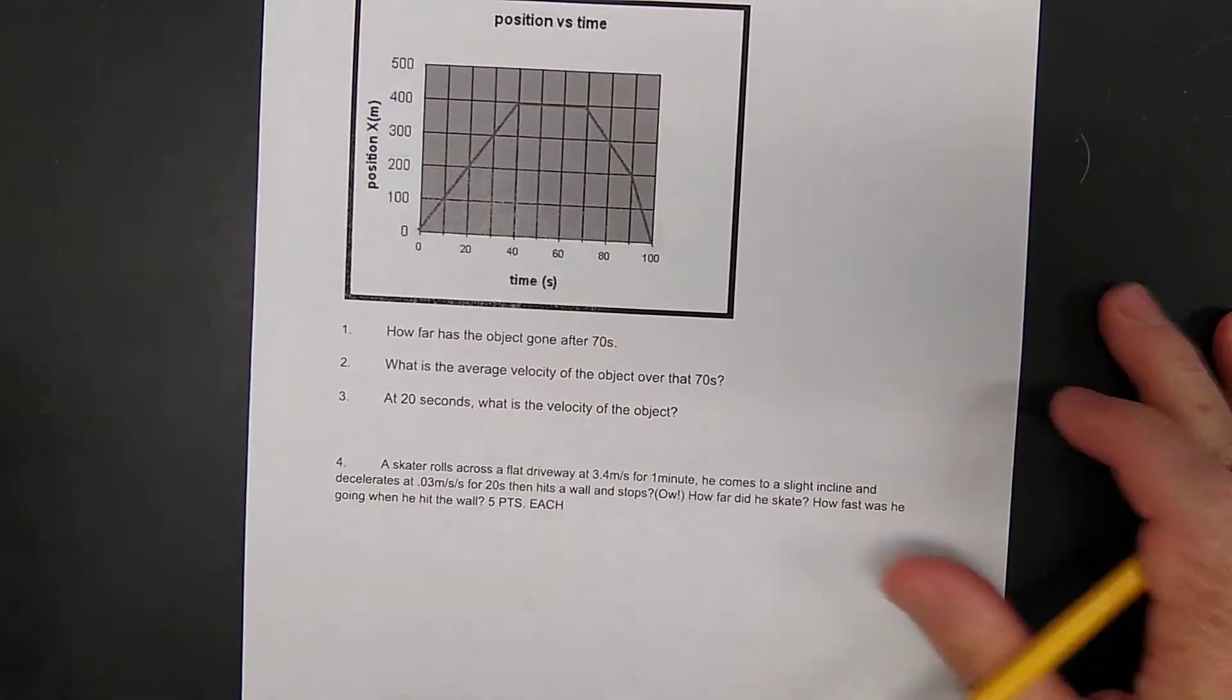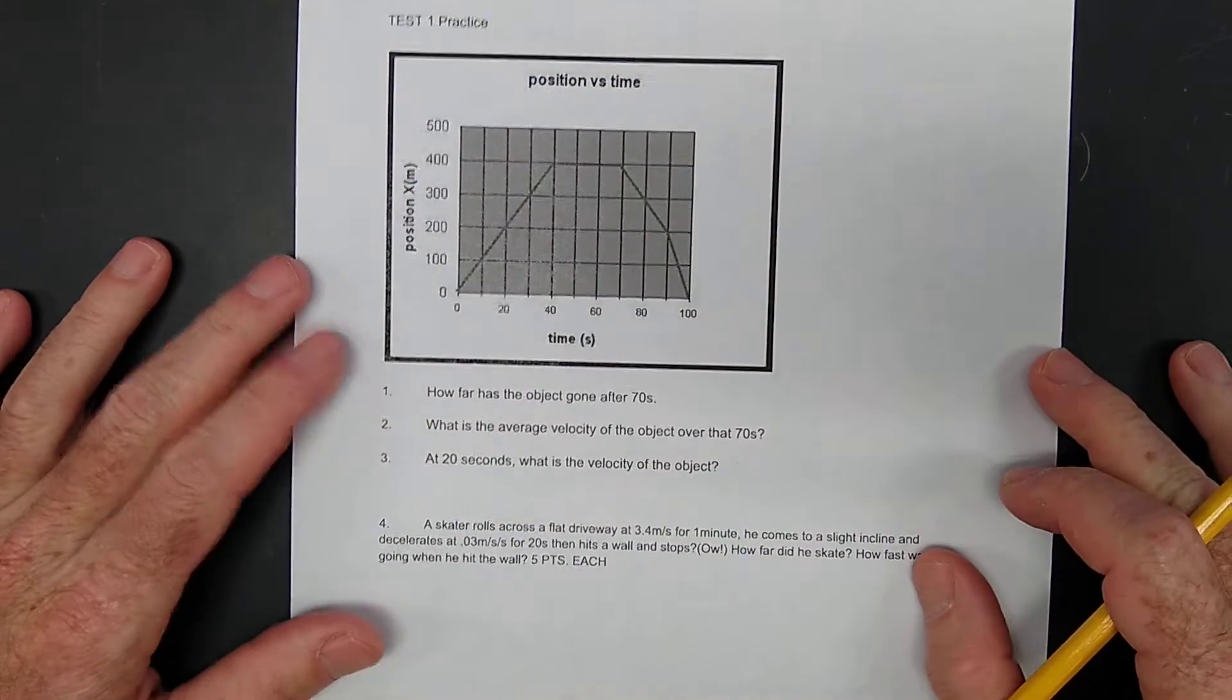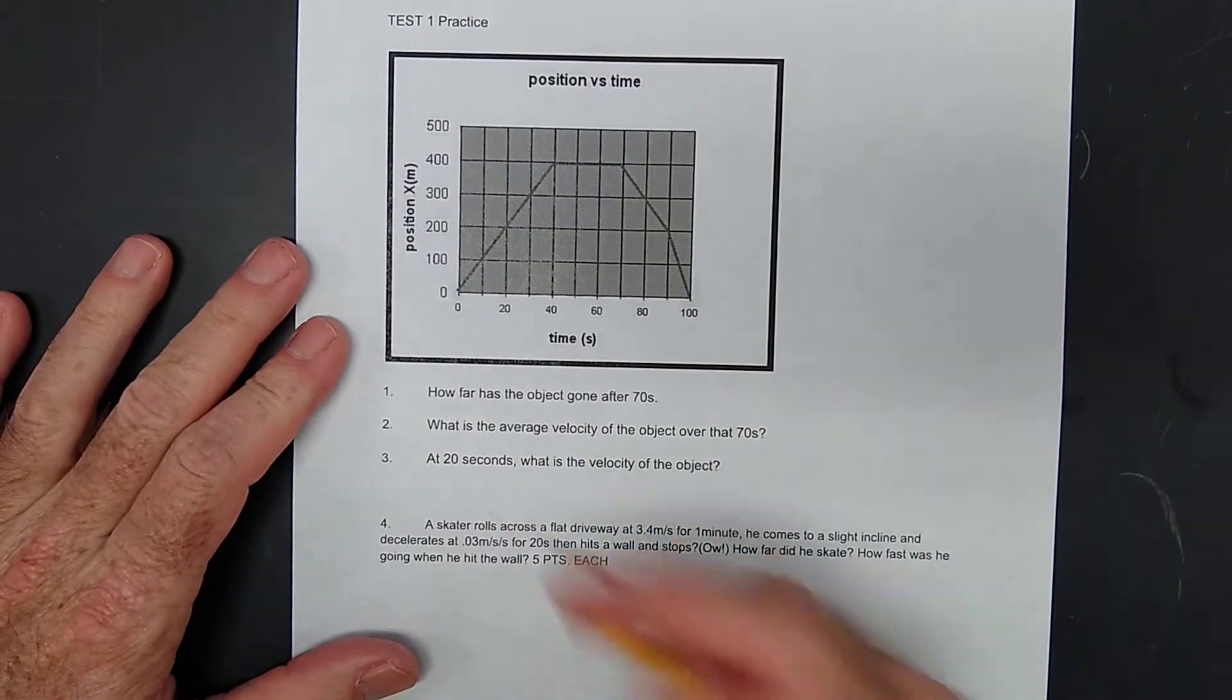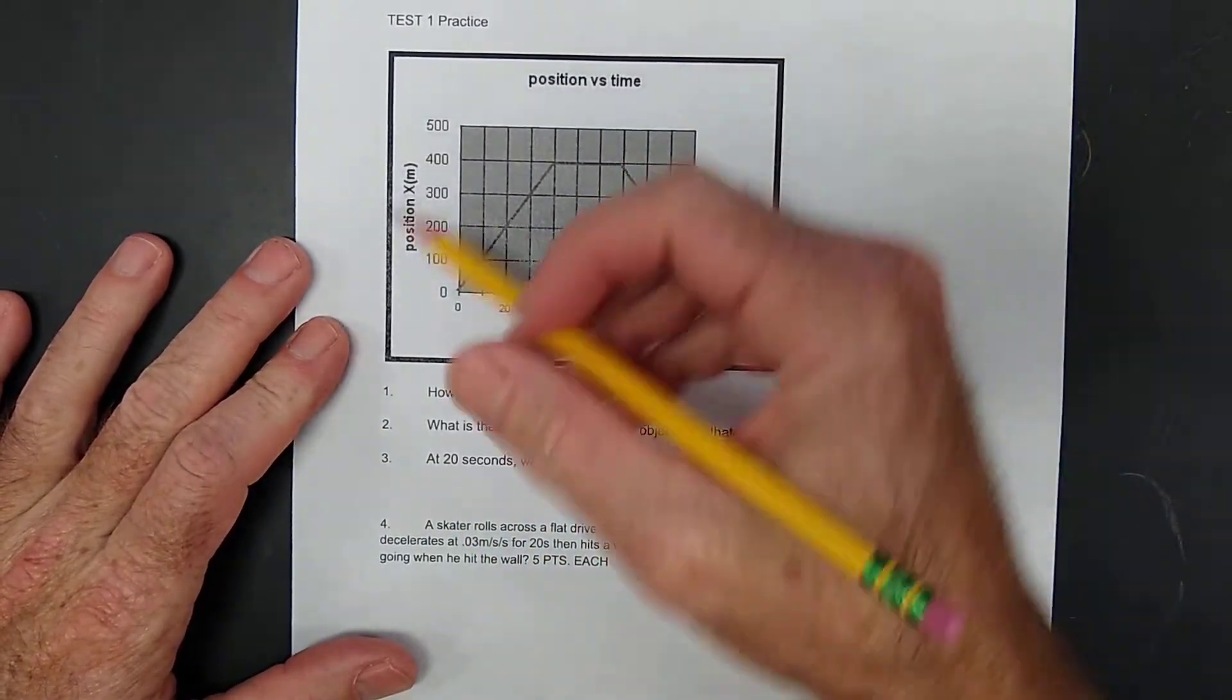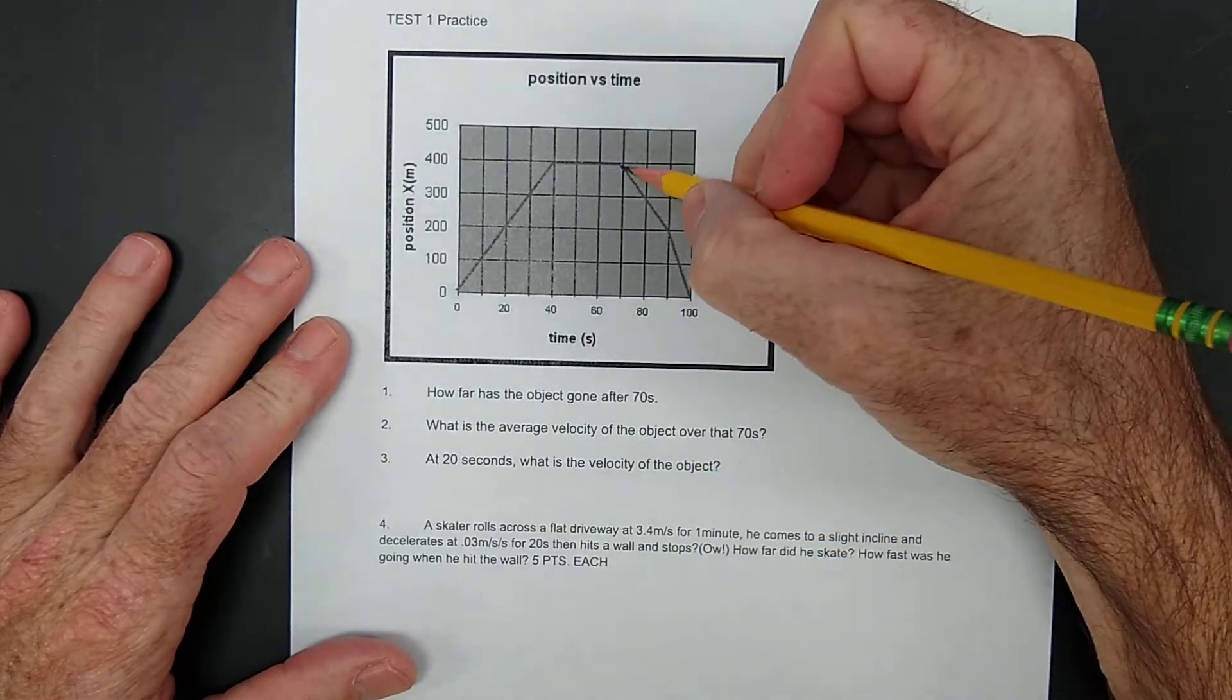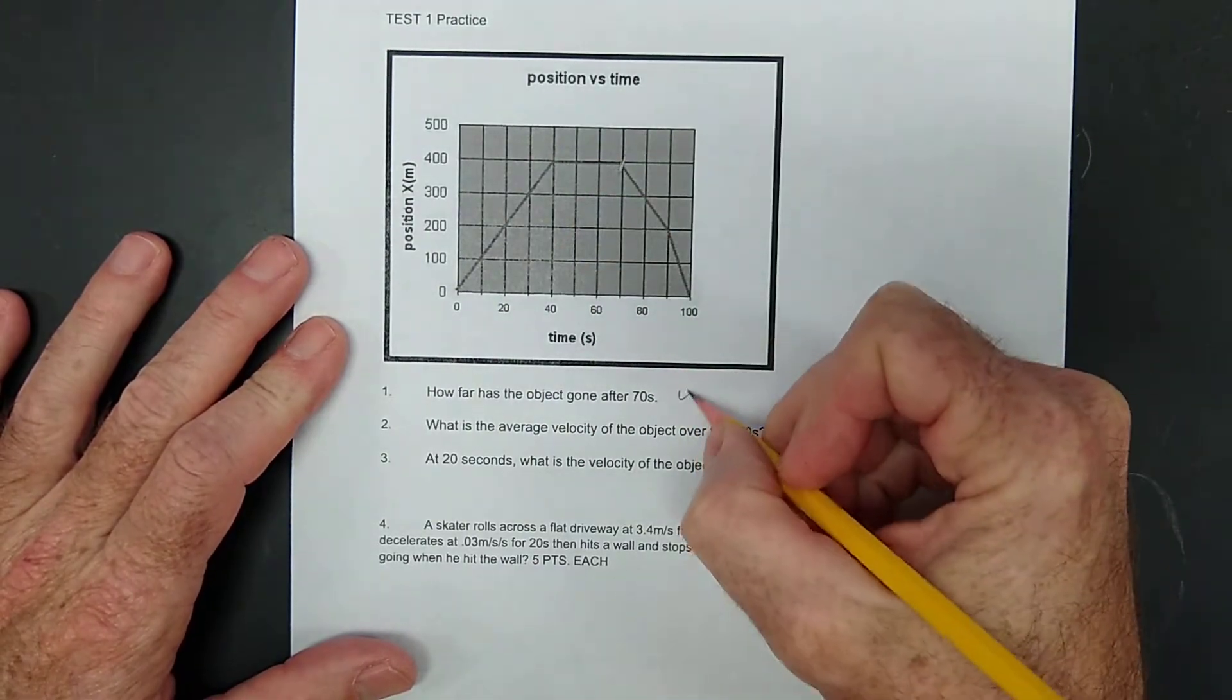Alright y'all, this isn't an ebb puzzle. It's just me solving these problems for this practice test. How far have we gone in 70 seconds? Well, since this is a distance over time graph, you can just look right here at 70 seconds and say 400 meters.